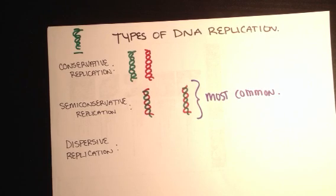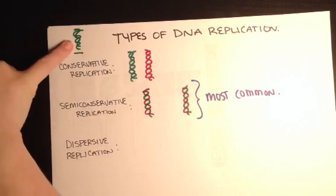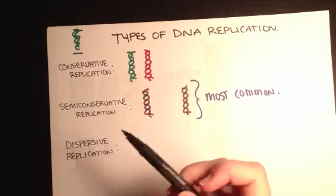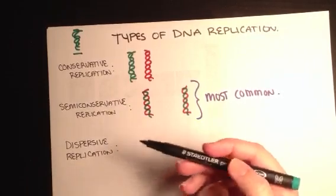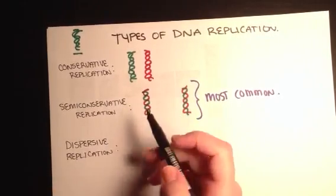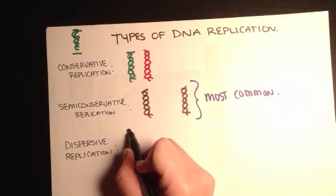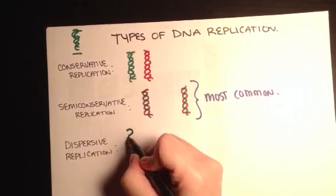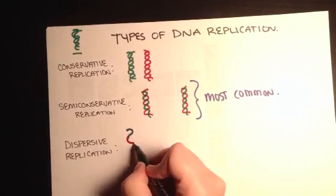So for example, like always, this parent strand unwinds, and what happens is it creates, it synthesizes a new DNA. And so one of the strands, you can see, is going to have both.